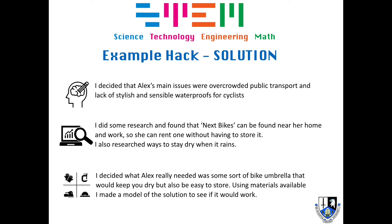I did some research and found that Next bikes can be found near her home and work — these are the bikes you see all over Glasgow with the pink mudguard on the back. I've decided she can rent one without having to store it at her house. I've also researched ways that you can stay dry when it rains. I decided what Alex really needed was some sort of bike umbrella that would keep you dry but also be easy to store. Using materials available, I made a model of the solution to see if it would work.